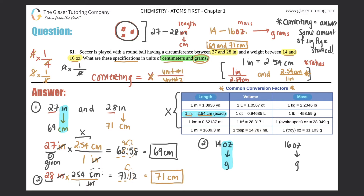There are two types of ounces on the chart. We're not using the troy ounce — that's only used for metals. For a soccer ball, we use the standard conversion: 1 ounce equals 28.349 grams. As ratios: 1 oz over 28.349 g, or flipped — 28.349 g over 1 oz.